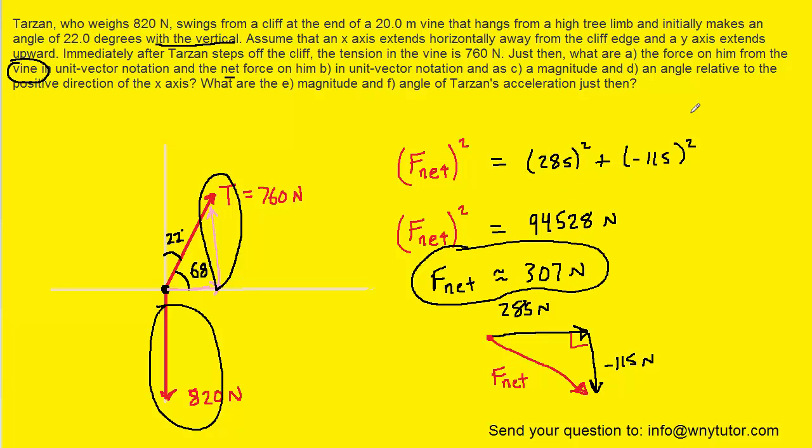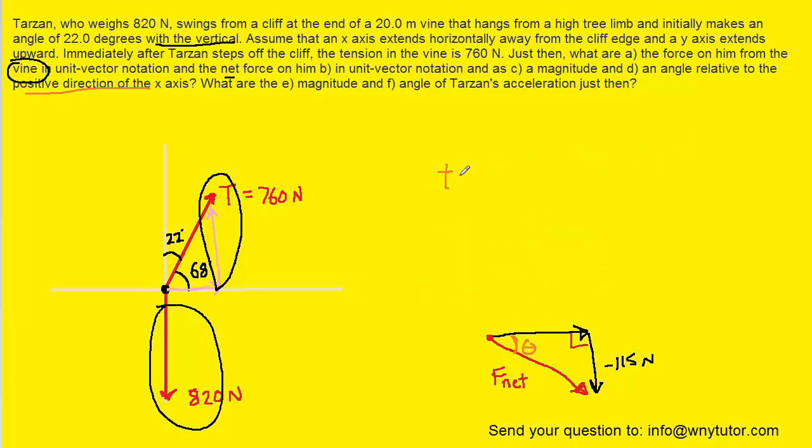Part D wants an angle relative to the positive direction of the x axis. So what we're looking for is this angle right here. We can see from this right triangle we have the opposite side of negative 115 and the adjacent side of 285. And we know that the tangent function could be used. We can say tangent of the angle is equal to the opposite side divided by the adjacent side.